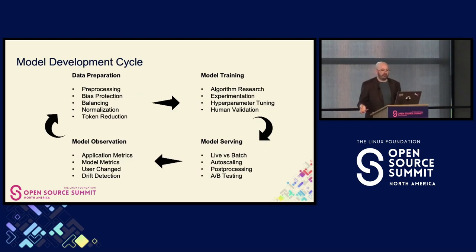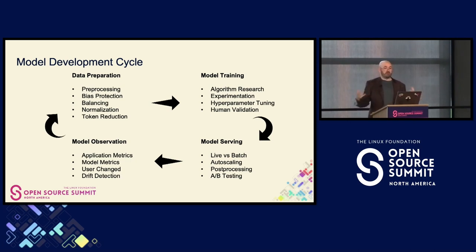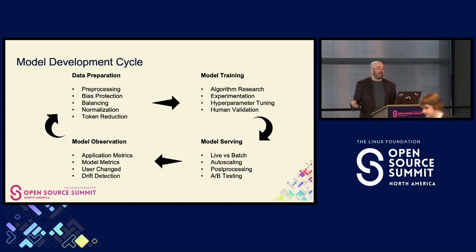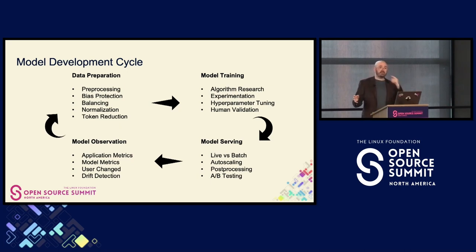So what does the model development cycle look like? It's a cycle — you're going through it all the time. You start off with data preparation: preprocessing, bias protection, all of that great stuff. From there you go into model training: you research your algorithms, do experimentation, hyperparameter tuning, human validation. From there you actually serve your model — maybe it's live, maybe it's batch, maybe you have autoscaling. There's A/B testing, and all the same stuff that goes into hosting an application still applies. Then you have model observation, and all of your application metrics still apply — plus drift detection. That observation creates new data which feeds back into data preparation, and the cycle continues.